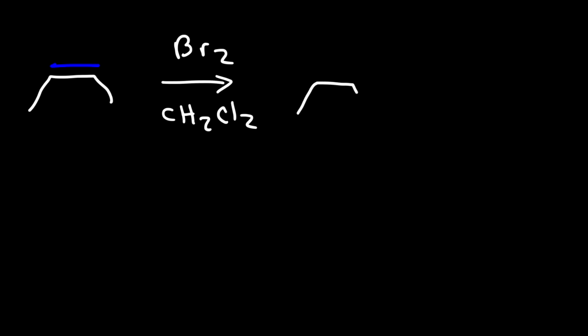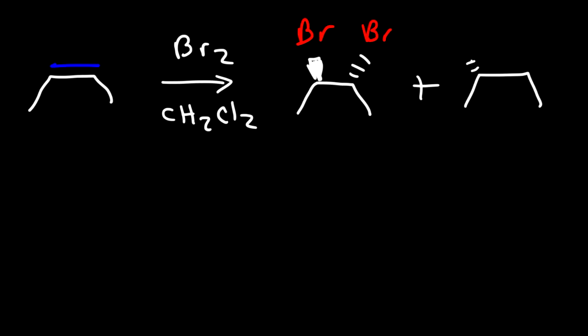We know this is an anti-addition reaction, so the bromine will add across the double bond, one being on the wedge and the other on a dash. We're also going to get the enantiomer as well. So this reaction gives us two products — a racemic mixture, or a pair of enantiomers.